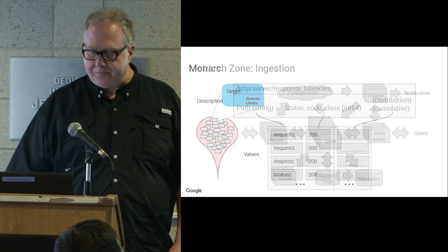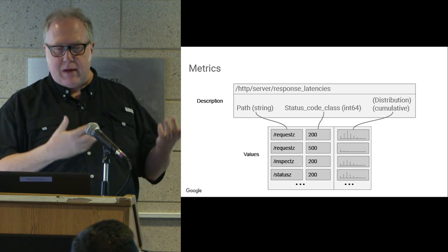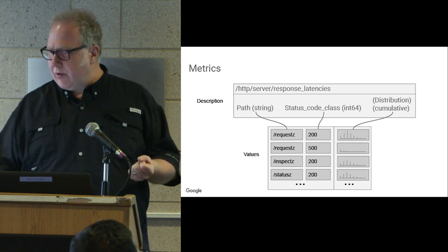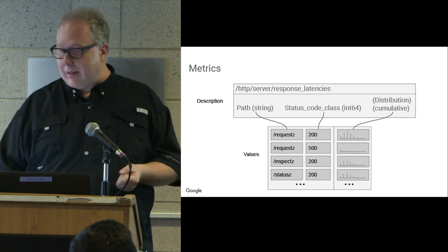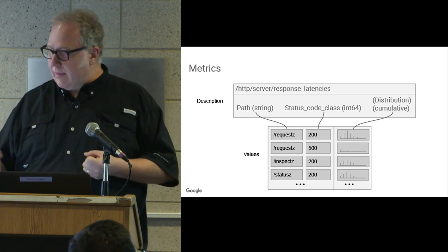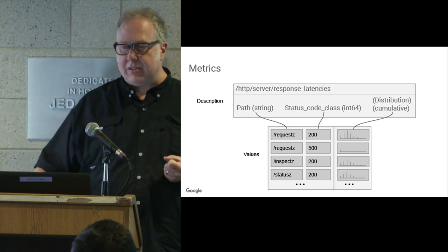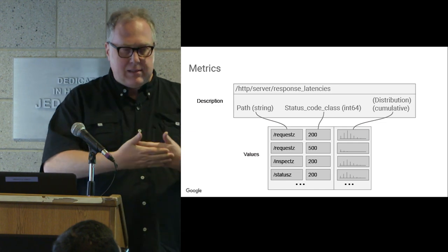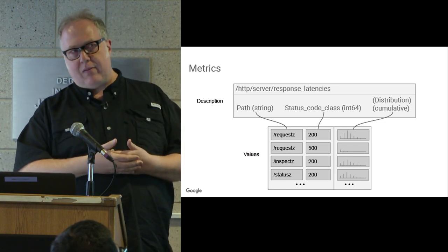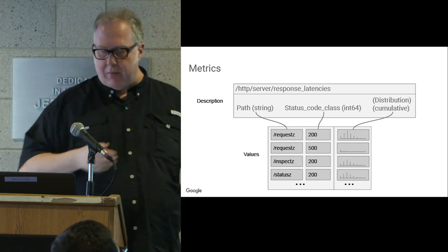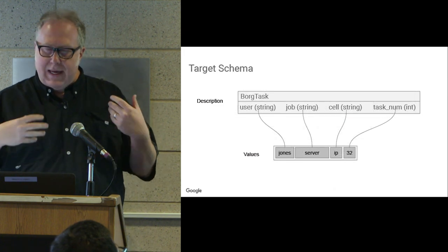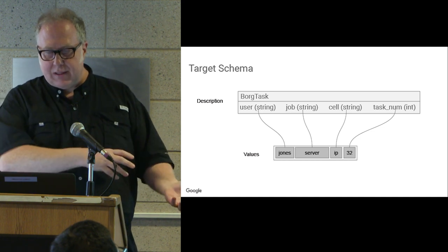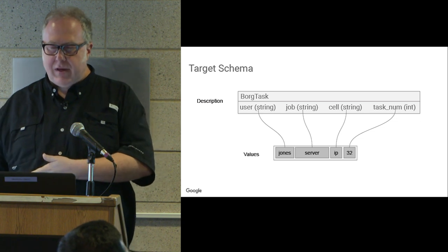A metric is our basic measurement of some aspect of that monitored target. It has a static descriptor: a name, a value type, and classification fields. Here's an example: response latencies for HTTP, classified by the string path and the response code. The value is a distribution — a histogram plus population plus statistics — so that you can compute percentiles. It's constructed so you can add these things together over many servers and ask: what is my 95th percentile HTTP response latency over these thousand machines serving my website? Each entity also has labels that classify it, and we call that a target.